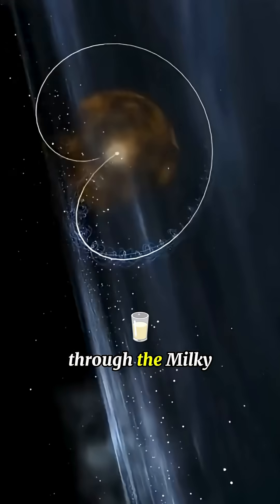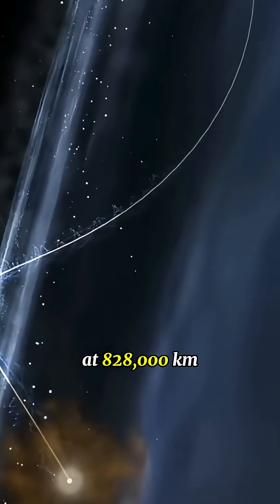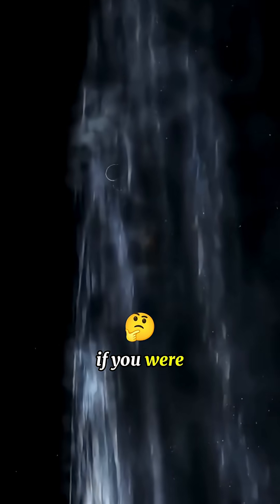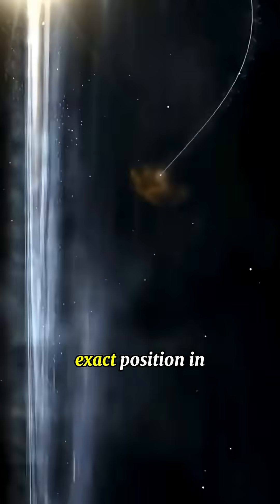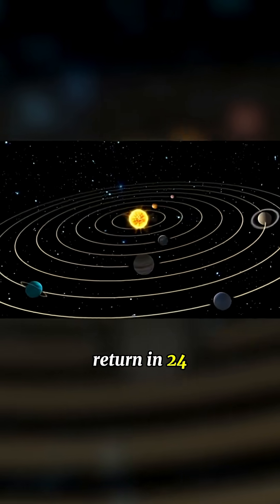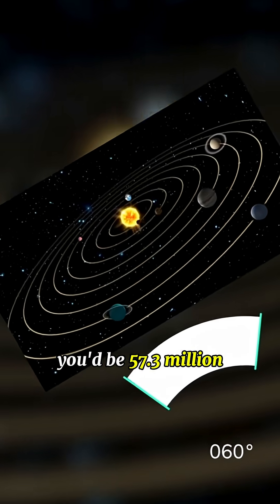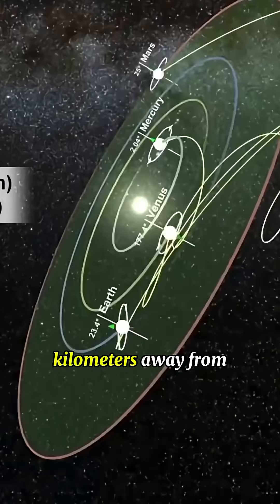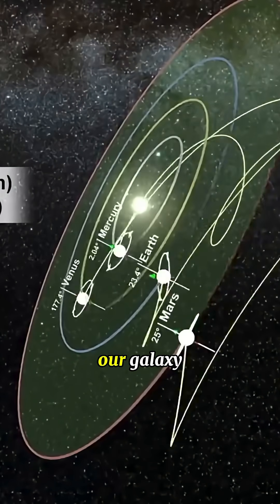As it hurtles through the Milky Way at 828,000 kilometers per hour. If you were to mark your exact position in space right now and return in 24 hours, you'd be 57.3 million kilometers away from that spot, and that's just our galaxy.